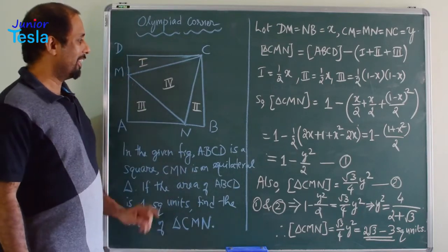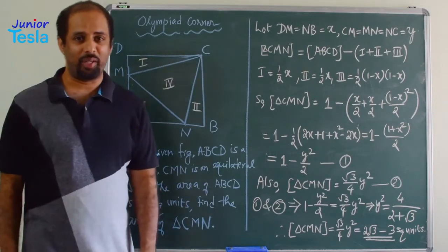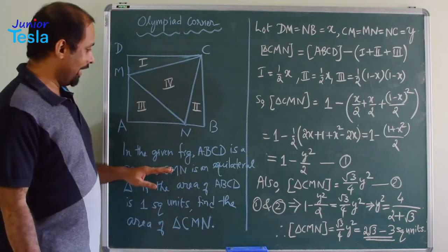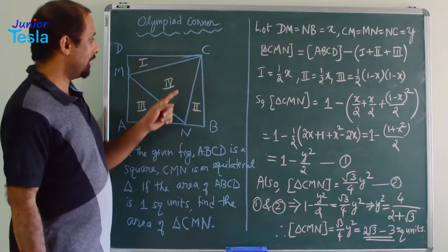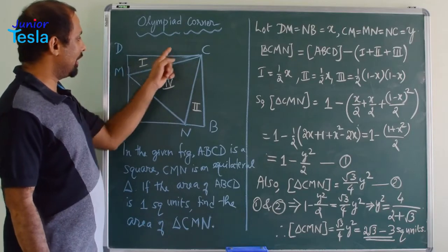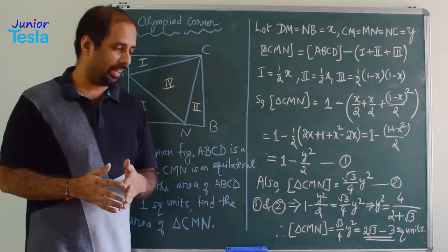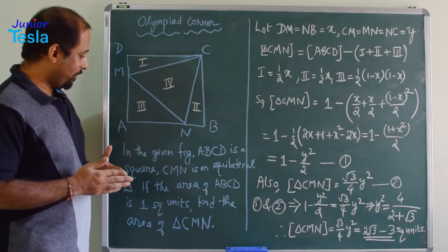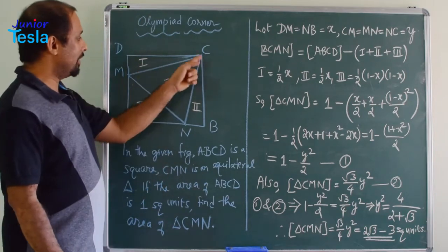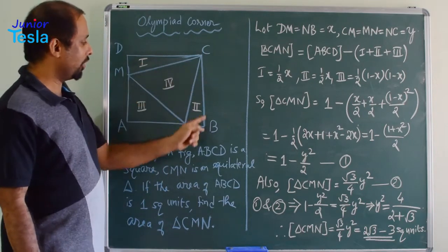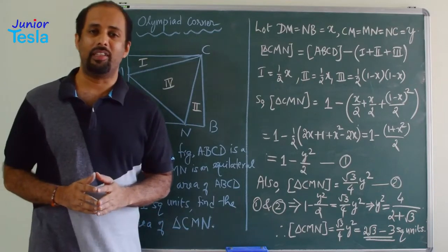The problem goes like this. There is a diagram. ABCD is a square, and CMN is an equilateral triangle drawn inside the square. All three sides are equal. If the area of ABCD is one square unit, you are supposed to find the area of triangle CMN.